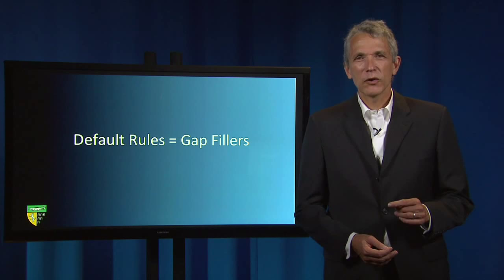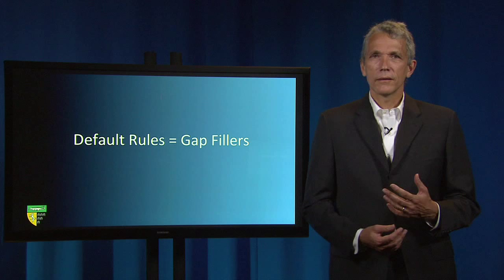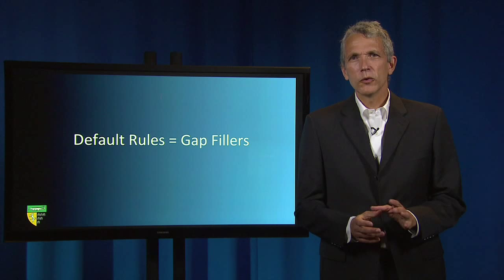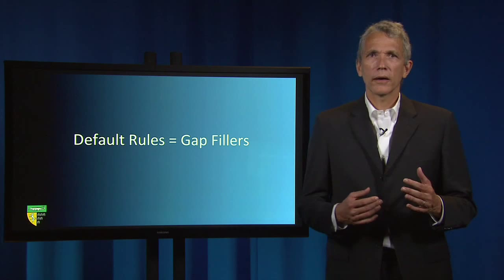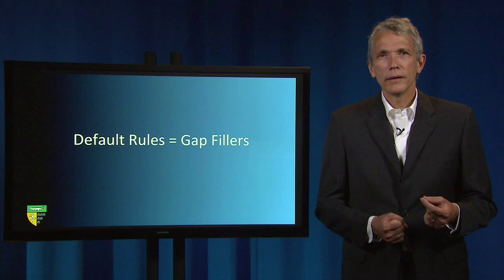Default rules can be established by common law courts or by legislatures. When a court decision says, as Judge Cardozo wrote in Jacob and Youngs v. Kent, that future parties are "free by apt and certain words" to contract for an alternative result, the decision is announcing a default rule.